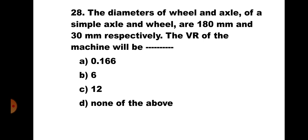Question number 28: The diameters of wheel and axle of a simple axle and wheel are 180 mm and 30 mm respectively. The VR of the machine will be: A) 0.166, B) 6, C) 12, D) none of the above. The formula for VR for wheel and axle is D/d, where D is diameter of wheel and d is diameter of axle. So VR = 180/30 = 6. The correct answer is B) 6.